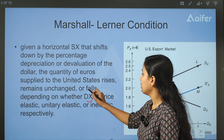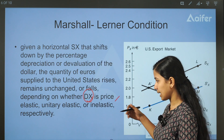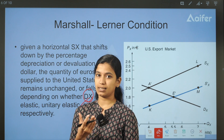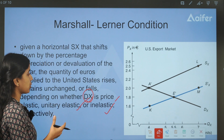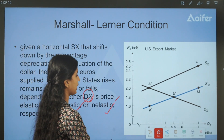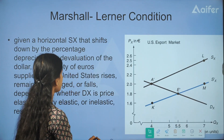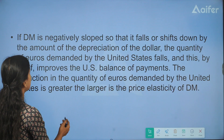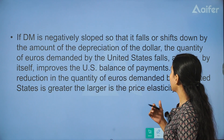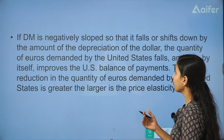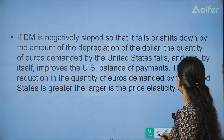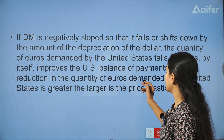Regarding demand for exports — price elastic, unitary elastic, or inelastic — if the demand for exports is negatively sloped so that it falls or shifts down by the amount of the depreciation of the dollar, the quantity of Euros demanded by the US falls. And this improves the US balance of payments.